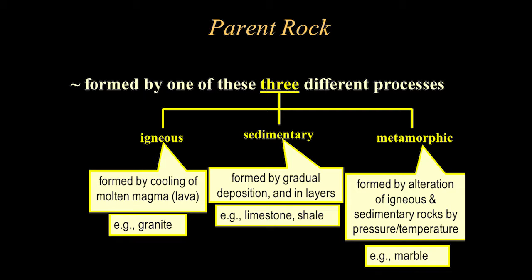Parent rock is formed by one of three different processes: igneous, sedimentary, and metamorphic. Igneous is formed by cooling of molten magma, for example granite. Sedimentary is formed by gradual deposition in layers, such as limestone and shale. Metamorphic is formed by alteration of igneous and sedimentary rocks by pressure and temperature, for example marble.